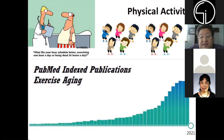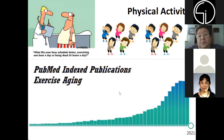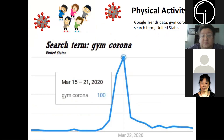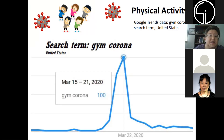Physical activity — if you look at PubMed, you see a lot of interest in the search terms exercising and aging, and there are many recommendations. We realize now that doing some exercise is good for healthy aging. However, gyms are potential areas where the COVID virus might spread, and as you can see, the terms gym and corona spiked in mid-March.